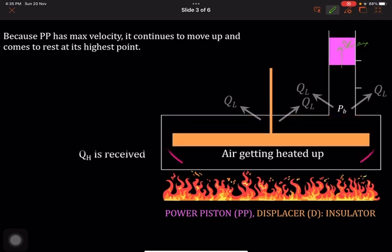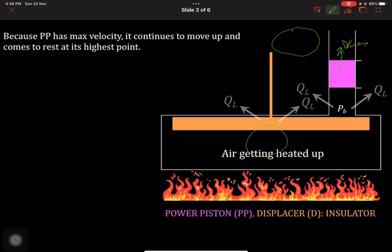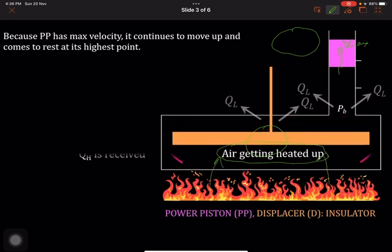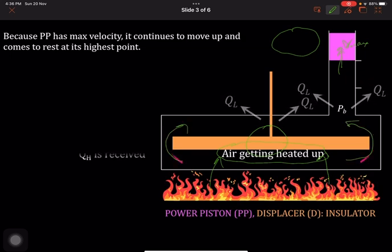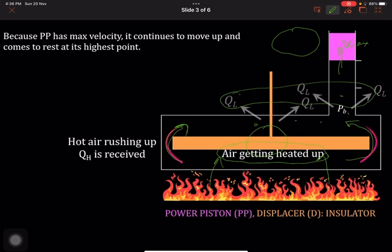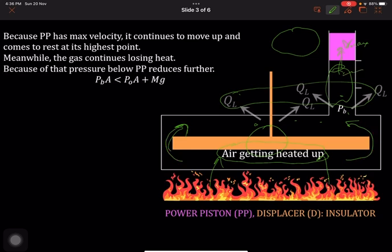While it is moving up, because of the mechanical arrangement, this displacer comes down. The air was being heated up, so the hot air moves up. But while the hot air is moving up, there is still cold air here, so heat is still being released. Because the air here is cooler, the temperature decreases, and because the temperature decreases, pressure decreases, so this has to come down.